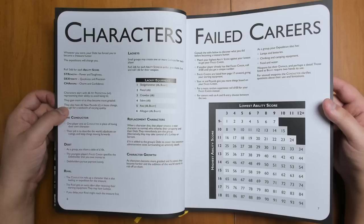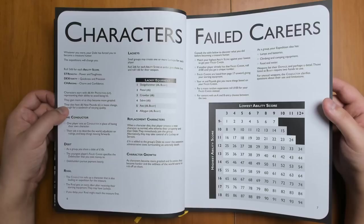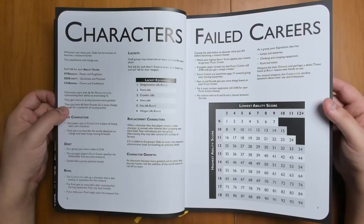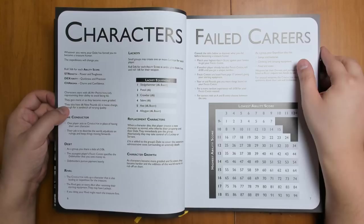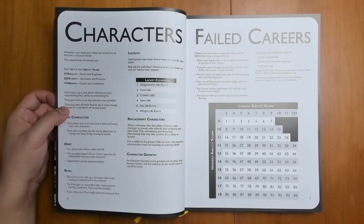You can start out with some money. You start out with your debt. The youngest player in the game starts out with 10,000 pounds in debt that you're going to have to work off because people are coming for you. You can also create a rival that's going after the treasure that you're going for. There's some rules on creating lackeys and how to pick your failed career.